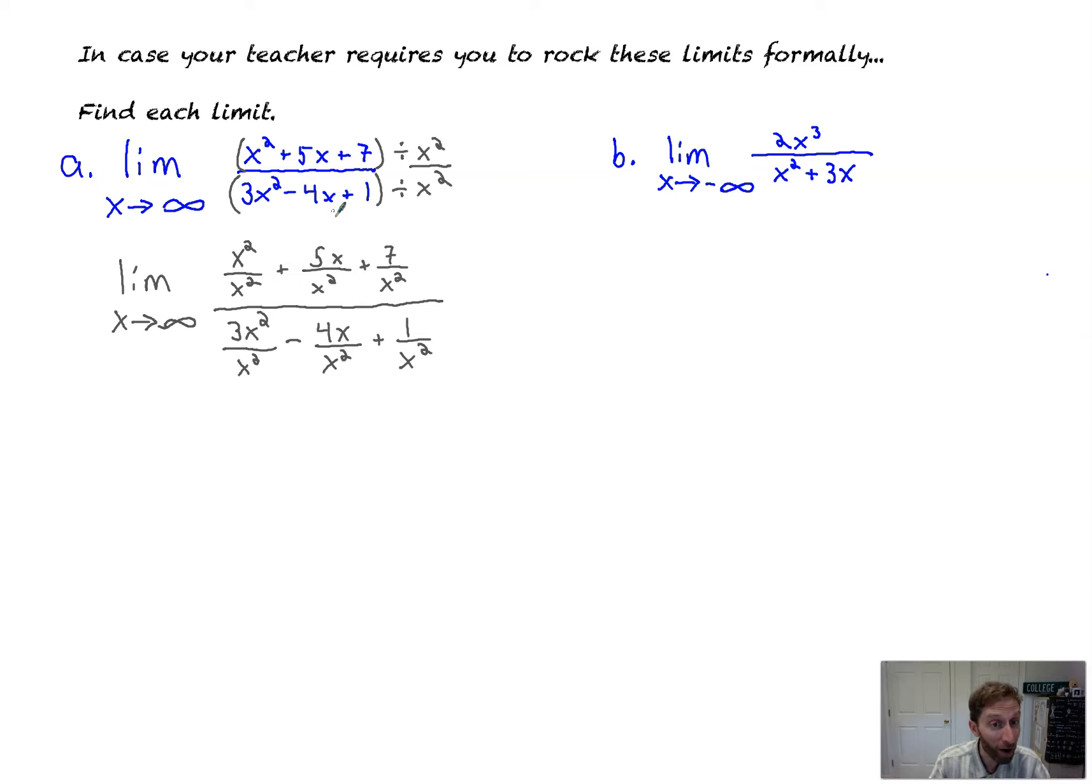Now, from here, what we've got to do is simplify. So we get the limit as x goes to infinity of x squared divided by x squared is 1. 5x over x squared is 5 over x. The x's divide out. You're left with one more power. 7 over x squared stays as is. All over, this becomes 3. The x squared's divide out. Minus x over x squared is 4 over x plus 1 over x squared.